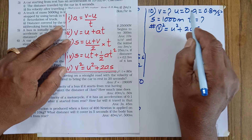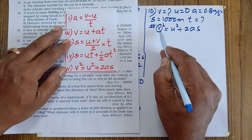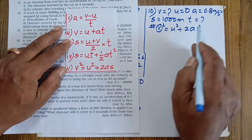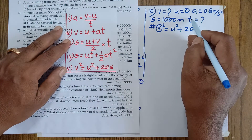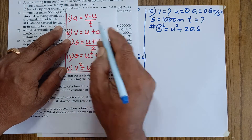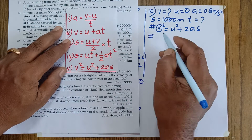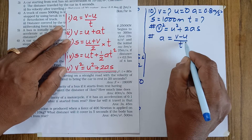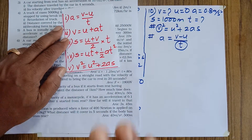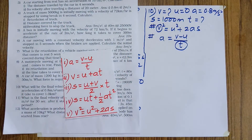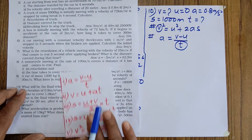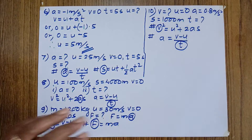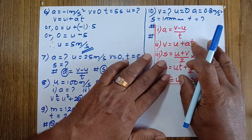After finding v, we now have u, a, s, and v — four quantities. To find time t, we use the first equation a = (v − u) / t and rearrange it to calculate t. This completes the plan for solving question number ten.